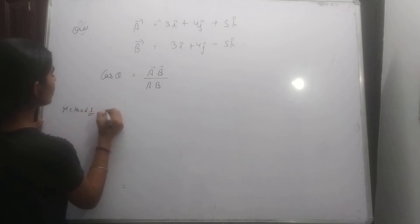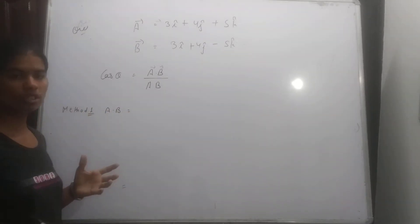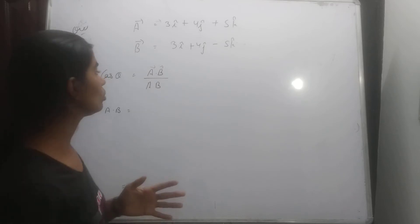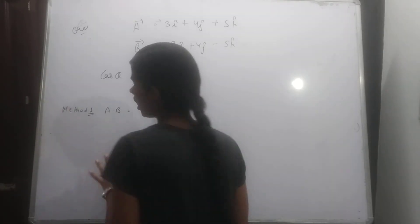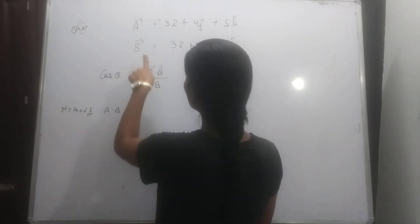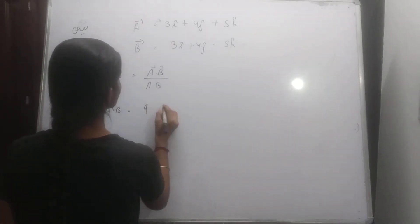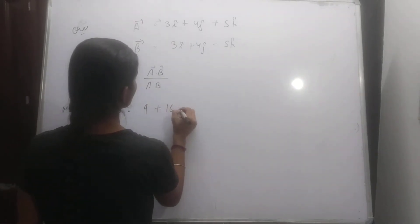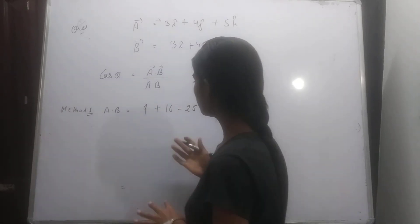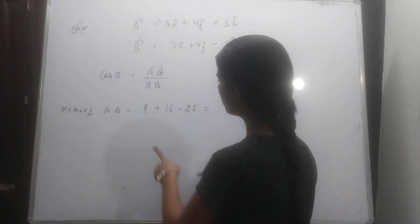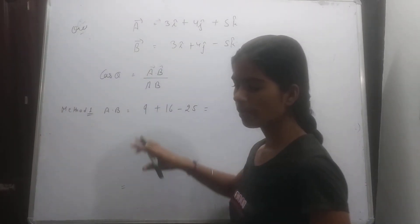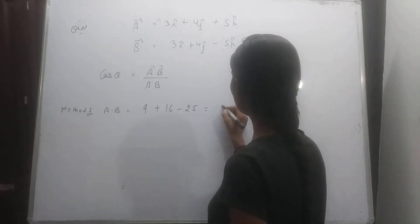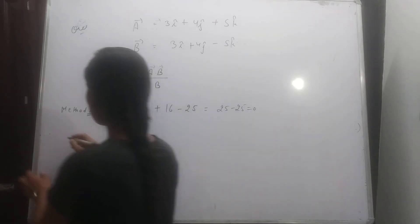Method number one mein to kya nikale jayga hai, a dot b. A dot b kya hooga hai, 9 plus 16, minus 25. That is the a dot b, that is the first method. 9 or 16 if we both have 25 minus 25 is equal to what is going on? 0. Method number 2.